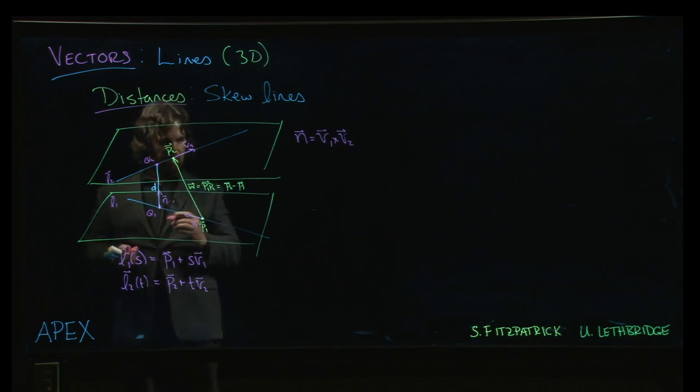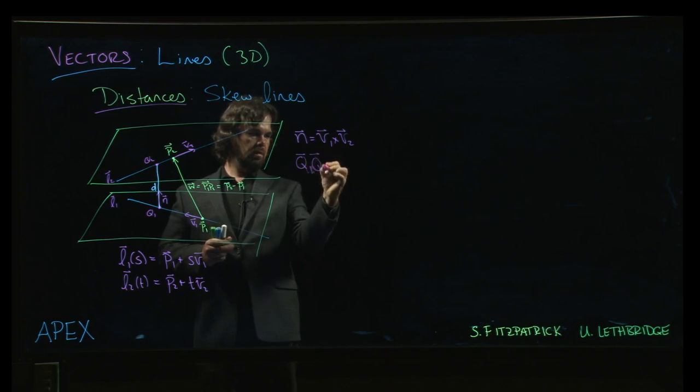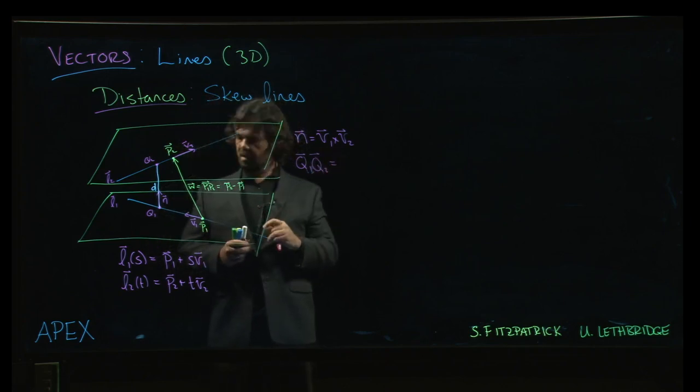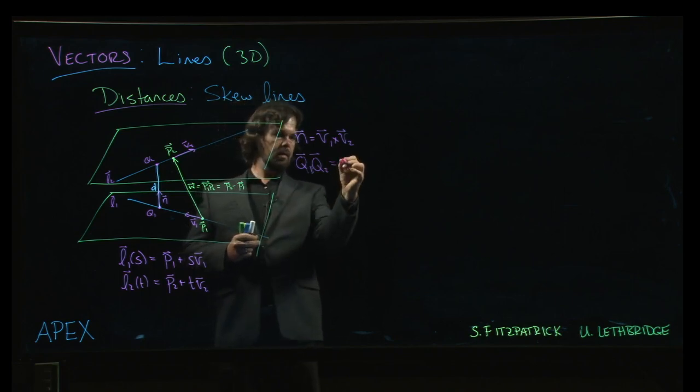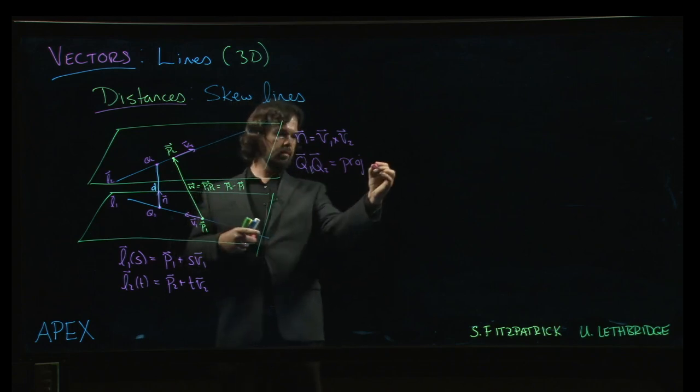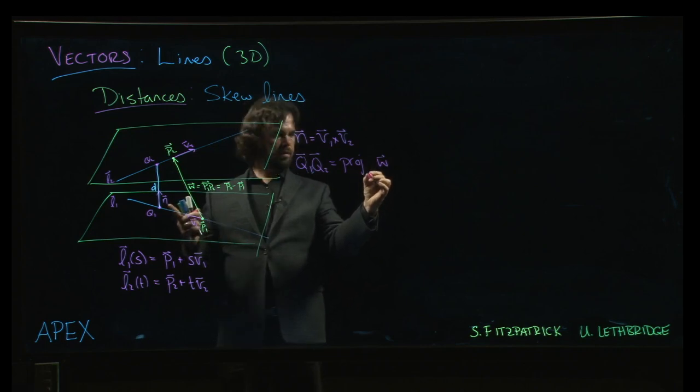So the vector that we want going from Q1 to Q2, that vector is going to be the projection of what we call W onto this normal vector.